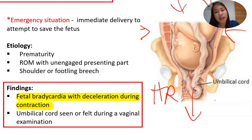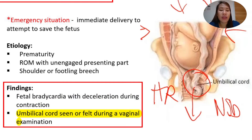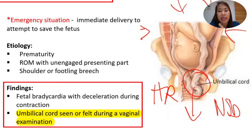We cannot deliver via NSD because it will further compress the cord. So, how are we going to deliver? Cesarean section. Another finding is the umbilical cord seen or felt during a vaginal examination — you feel a soft and irregular mass inside the vagina that does not feel like the foot, buttocks, or head of the baby. Or you may visually see the cord already outside the vagina. That is already an emergency situation.